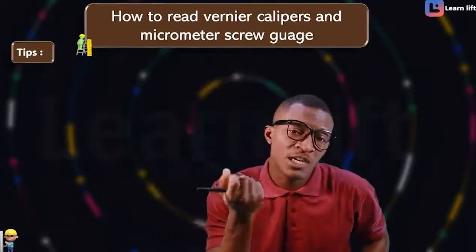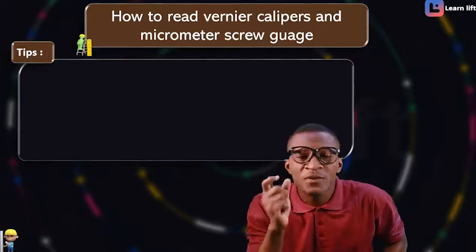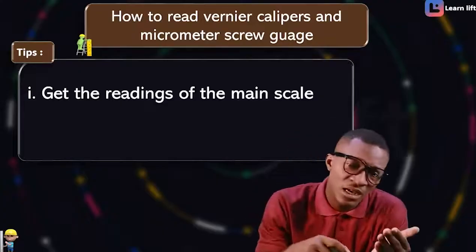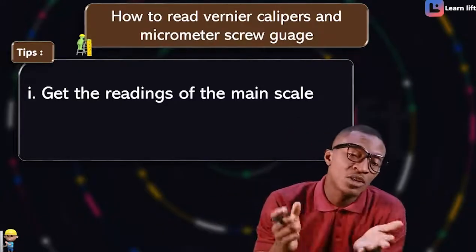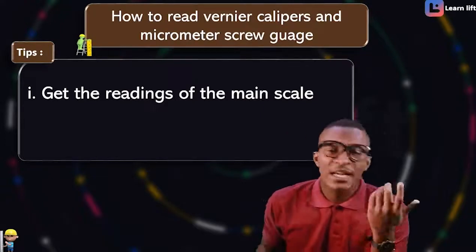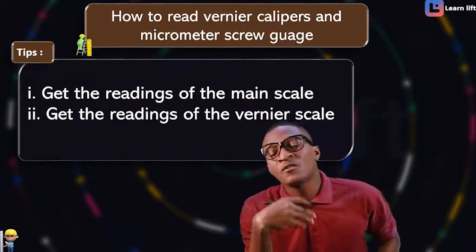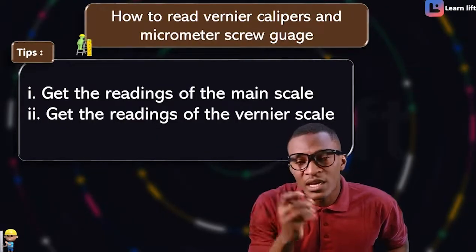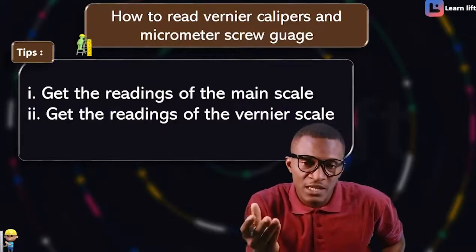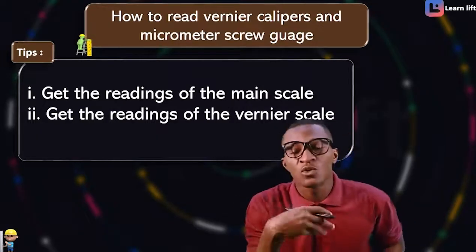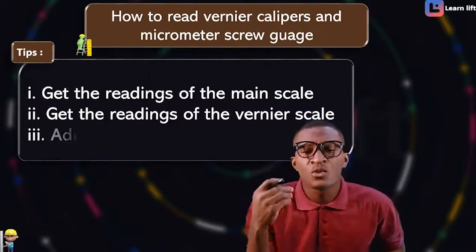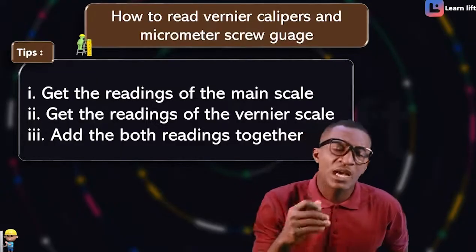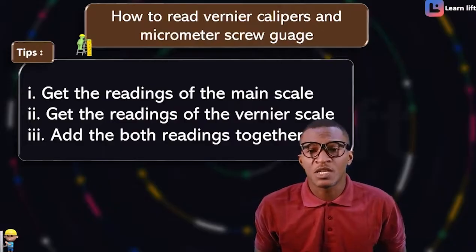The tips for reading a micrometer screw gauge and vernier caliper are simple. First, get the readings on the main scale. Your vernier caliper has two parts: the main scale and the vernier scale. Your micrometer screw gauge also has a main scale and a screw scale. Get the reading of the main scale, get the reading of the vernier scale or screw scale, and then add both of them together.